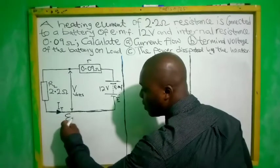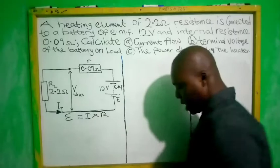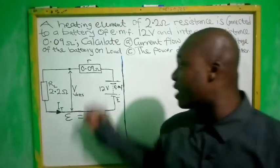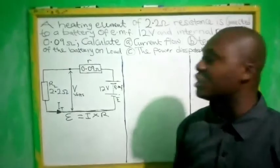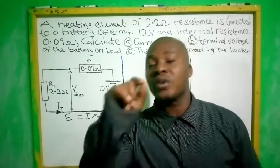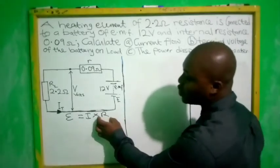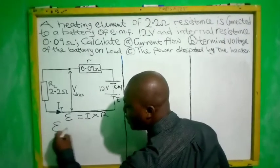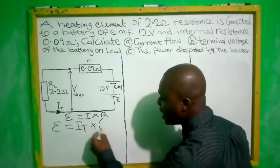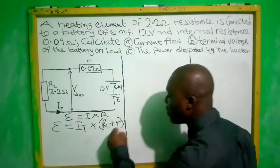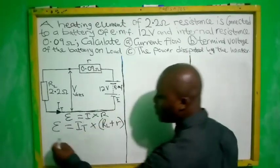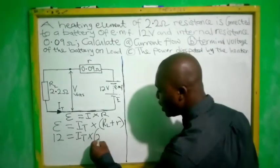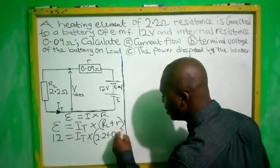To calculate for the current, we use the general formula: EMF equals current times the total resistance. The internal resistance is denoted by small letter r and the load resistance by capital R. Since internal resistance is in series with load resistance, we write: EMF = total current × (load resistance + internal resistance). So: 12 = I × (2.2 + 0.09).